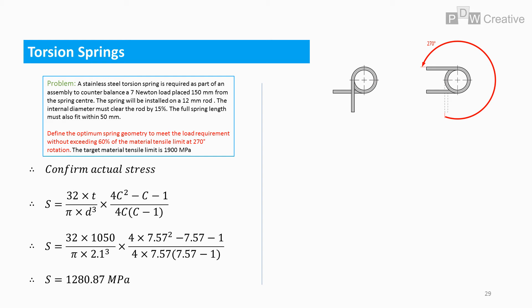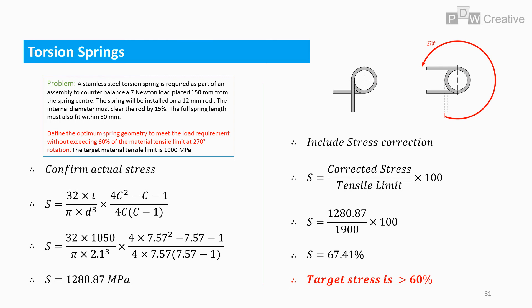But does this meet our 60% stress target? The answer is corrected stress over tensile limit times 100. And the calculation gives an actual stress of 67.41%. This is way above target, so we need to go back and recalculate the wire diameter.